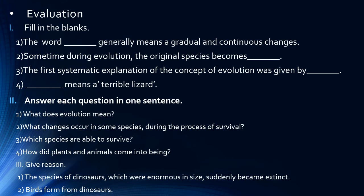Second, what changes occur in some species during the process of survival? Answer is in the process of survival by adapting to environmental changes, certain internal physical changes occur in some animals of species.